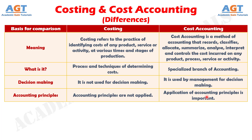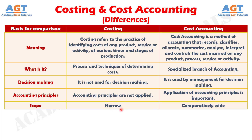Difference number five: costing is an indispensable part of cost accounting as it contains various techniques on which the entire cost accounting system is based. Conversely, cost accounting is not confined to costing techniques; rather it also captures the cost related information, prepares periodical statements and reports, so as to ascertain and control costs.